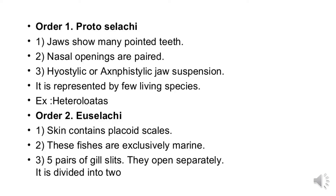The first order is Protoselachii, which contains fishes with jaws and pointed teeth. Nostril openings are paired. Jaw suspension is hyostylic or amphistylic. They are represented by few living species. An example is Heterodontus.